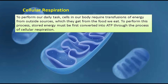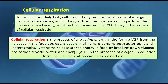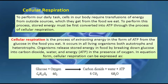Cellular respiration: to perform our daily tasks, cells in our body require energy from outside sources, which they get from the food we eat. To perform this process, stored energy must first be converted into ATP through cellular respiration. Cellular respiration is the process of extracting energy in the form of ATP from the glucose in the food you eat. It occurs in all living organisms, both autotrophs and heterotrophs. Organisms release stored energy by breaking down glucose into carbon dioxide, water, and energy in the form of ATP in the presence of oxygen.